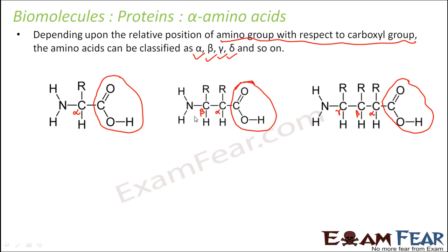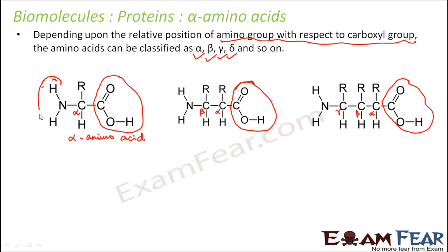In some cases, there is no gamma carbon, and in others there is no beta or gamma carbon. Now, the amino acid where the amino group is connected to the alpha carbon is known as an alpha amino acid. Here the amino group is connected to the alpha carbon, so it is an alpha amino acid.